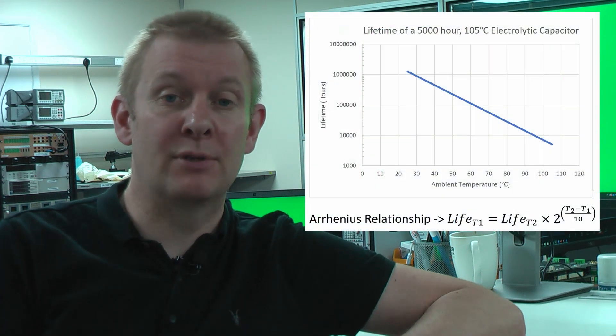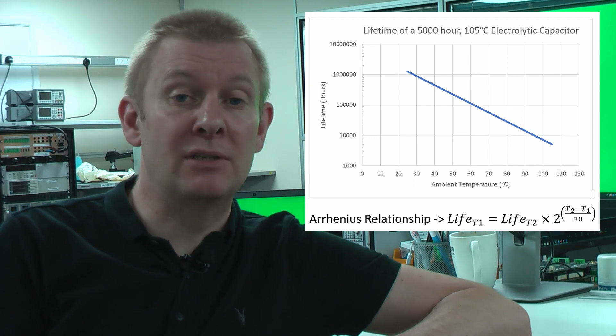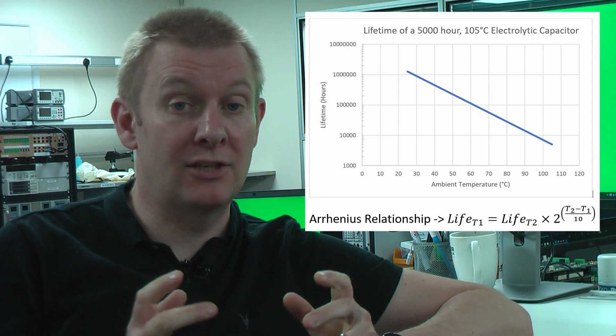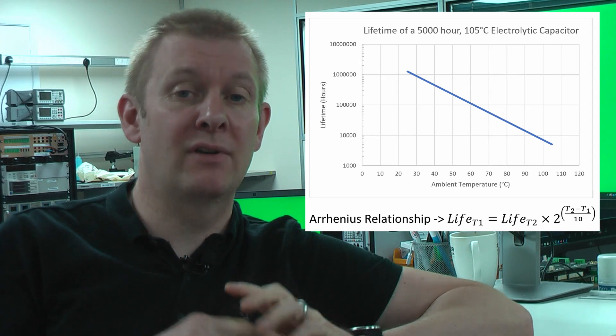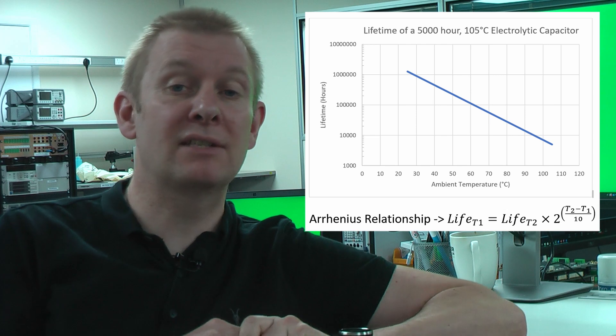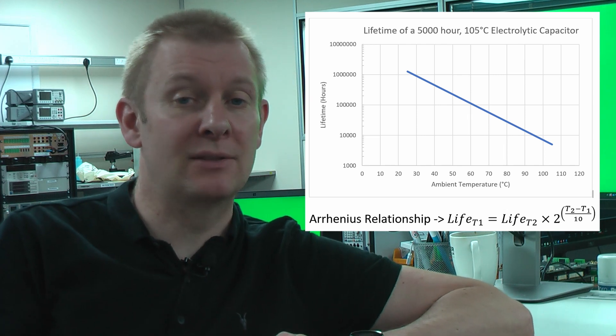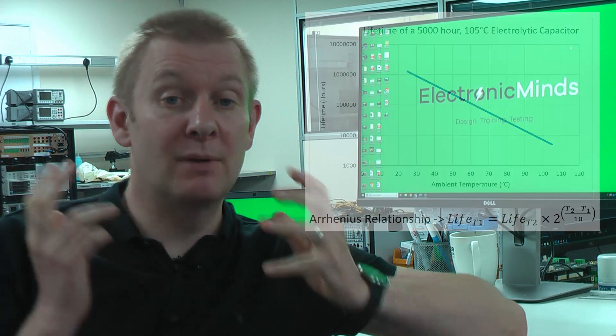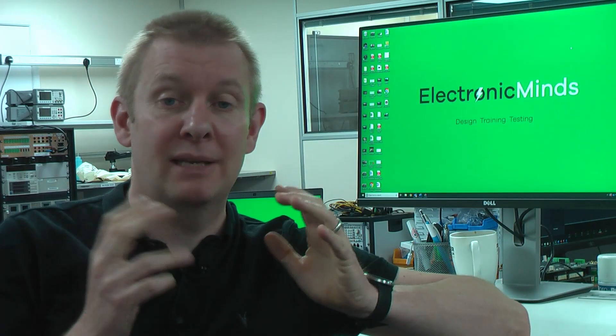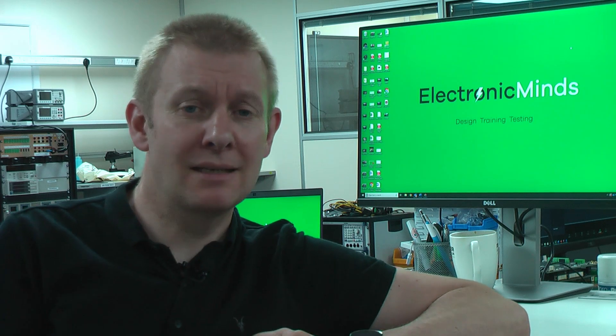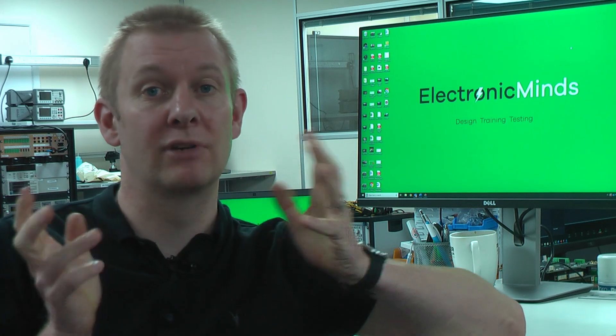Nearly all wear-out mechanisms speed up as temperature is increased, and this can be described using the Arrhenius relationship, which predicts that the lifetime of a component decreases by a factor of 2 for every 10 degrees increase in operating temperature. But the most important aspect of high-reliability design is to understand component wear-out mechanisms and measure operating stress levels, particularly temperature, on real hardware.